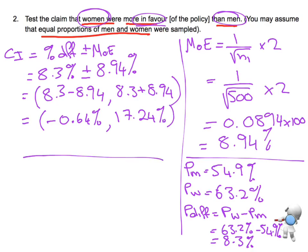So our confidence interval is from negative 0.64% through to 17.24%. Remember, this confidence interval is estimating for the population — based on this sample, we're estimating that in the population of all Aucklanders, the support for women is between this much and this much compared to the men. A negative answer means the percentage support for women is slightly lower; a positive means it could be higher. Because the interval includes 0, the percentage support could be the same — a difference of 0 in the population.